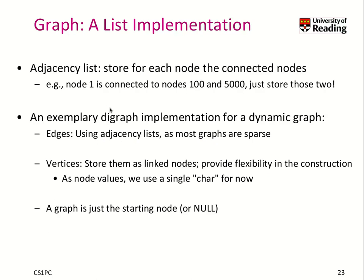Here we will have a look at a list implementation of the graph where we store an adjacency list. That means we store for each node the connected nodes. So if node 1 would be connected to nodes 105,000, we just store those two. We will use as an example a DGraph implementation and a dynamic graph — that means we can grow and shrink the graph dynamically as needed. This fits very well our adjacency list model because most graphs are actually sparse and need some dynamics to be stored, so we store them as linked nodes, which is kind of a list. We use again a single character for now to store the values of a node.